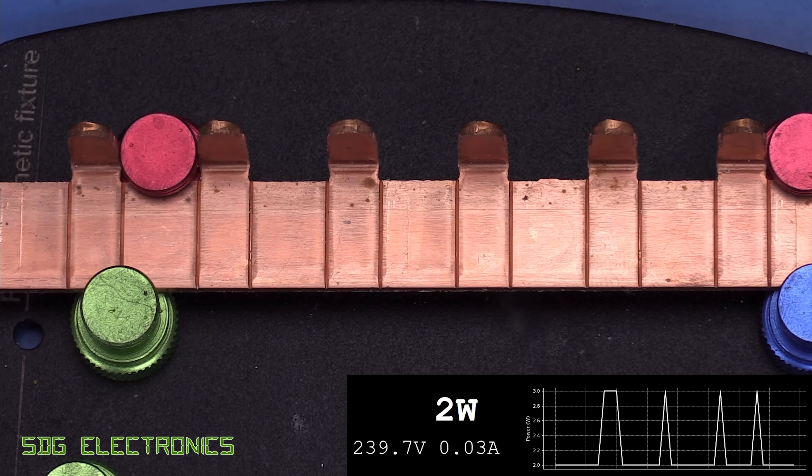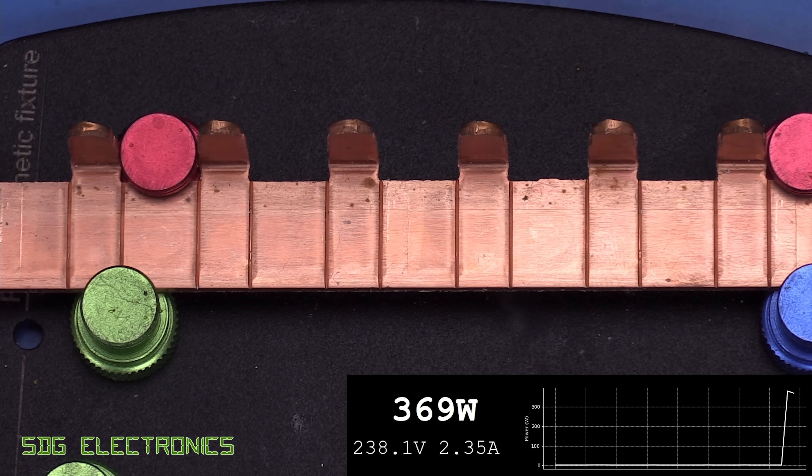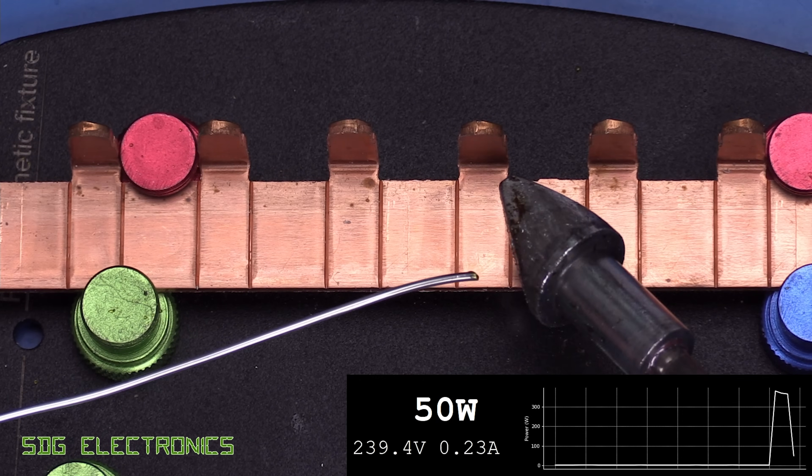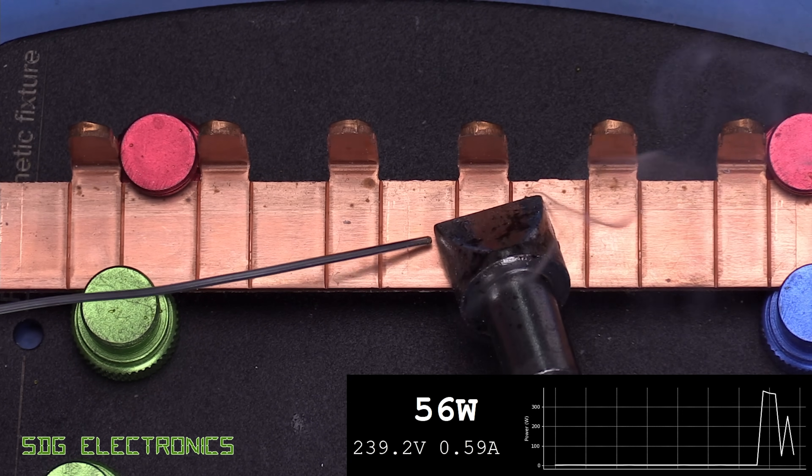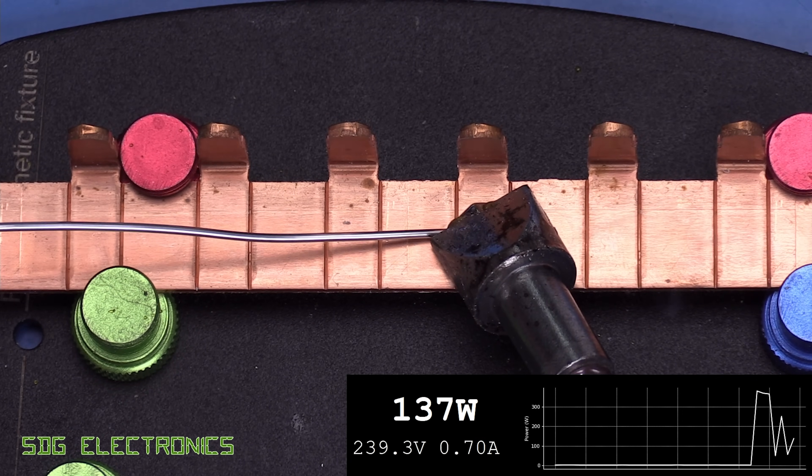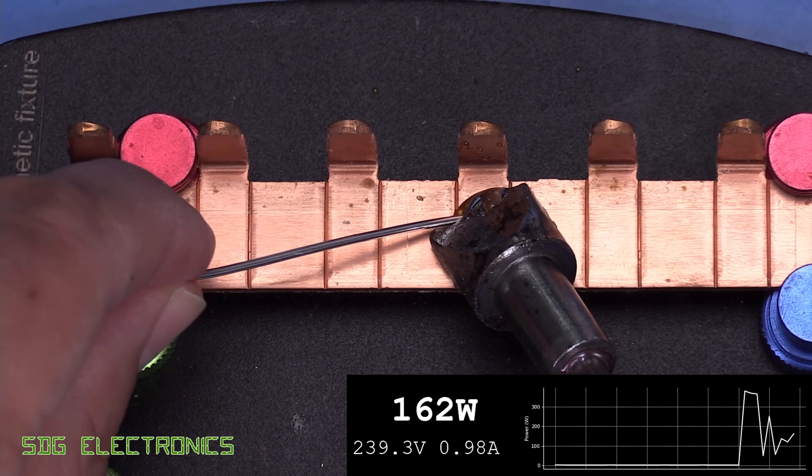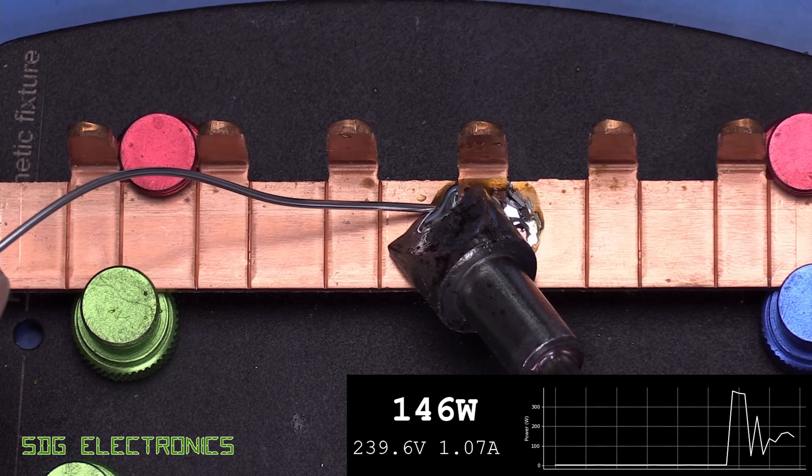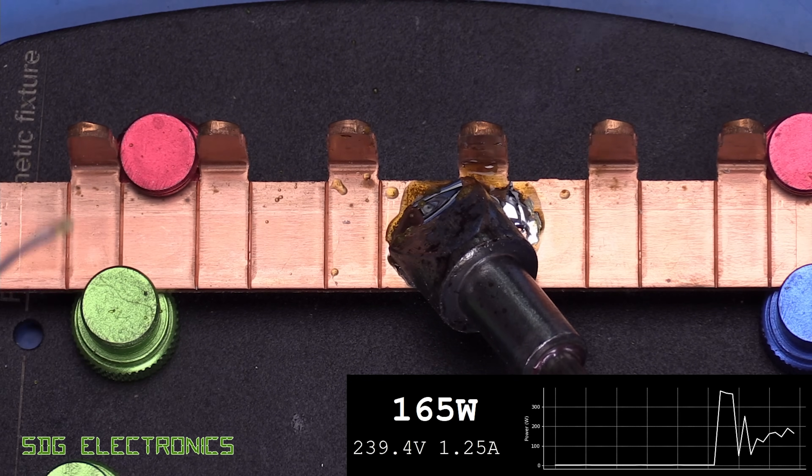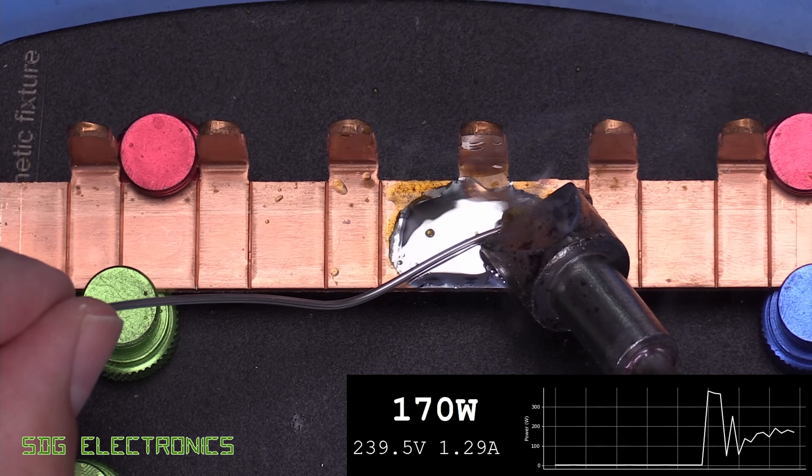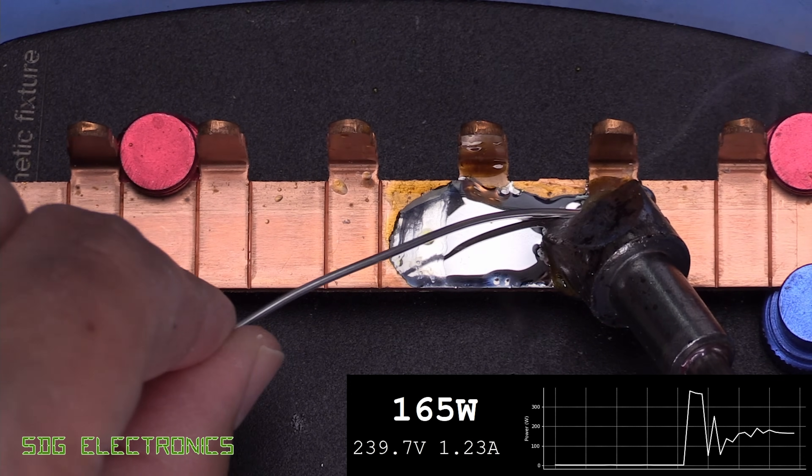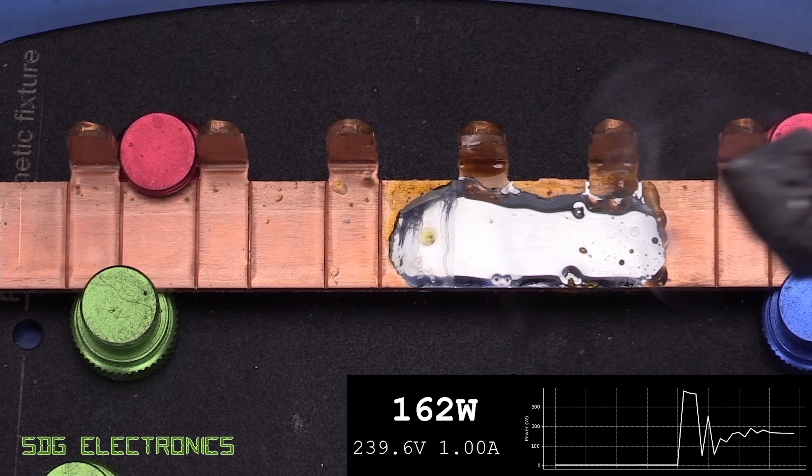How about if we wanted to solder onto some copper busbar. Let's see how well it handles this. So a bit of solder on the bottom to get the flow going.